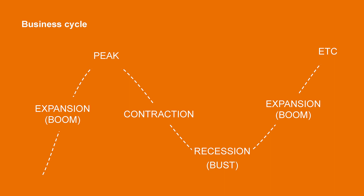The variations in booms and busts in the economy are referred to as business cycles. The first phase of a business cycle is an expansion, or boom. Then the economy reaches its peak, followed by a contraction, and finally a recession, or bust. Then the cycle is repeated.